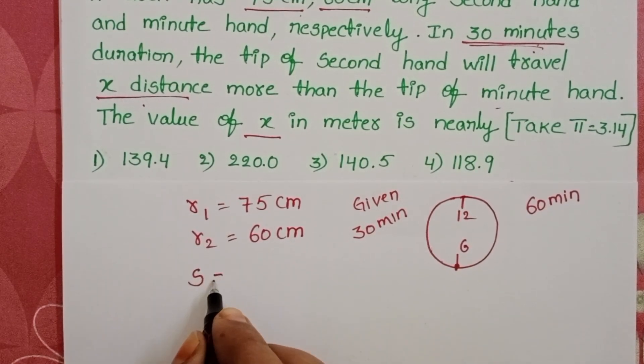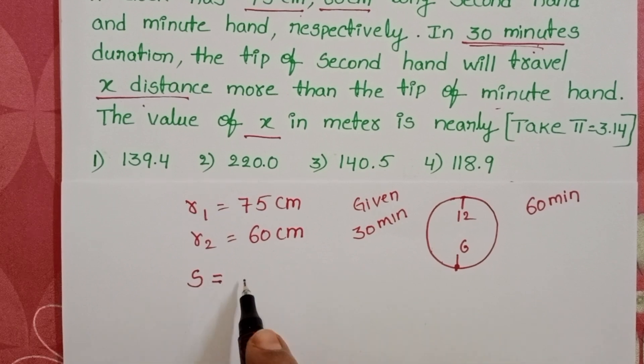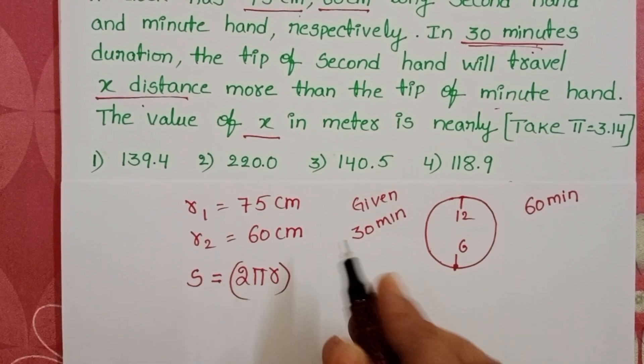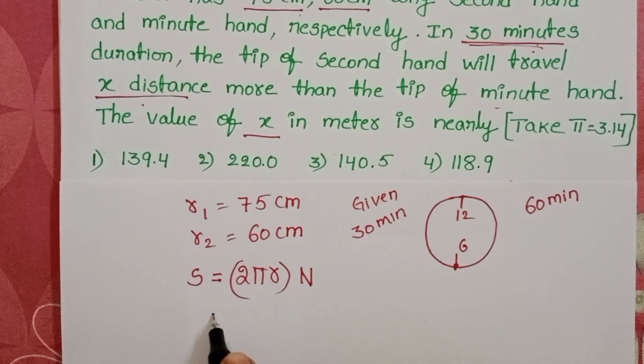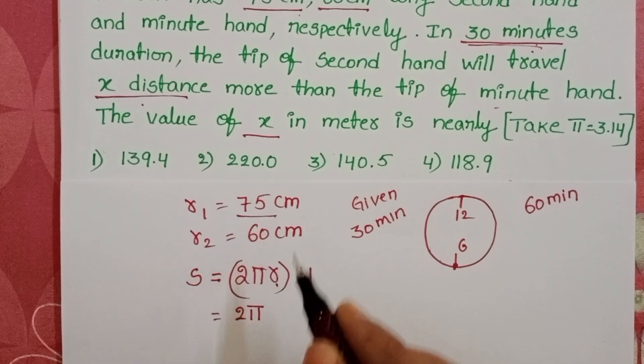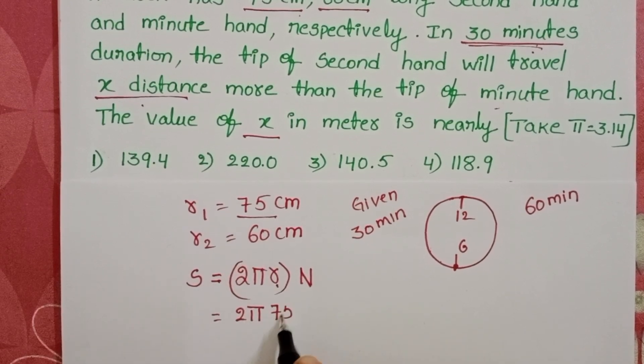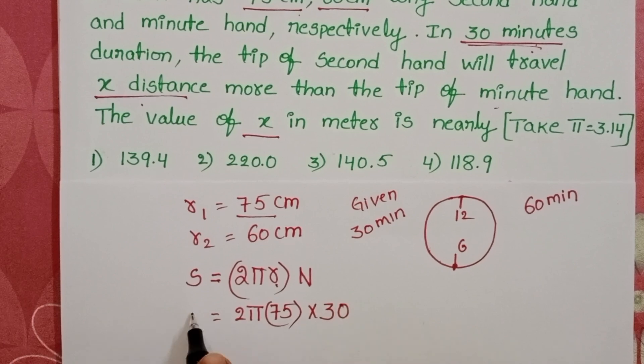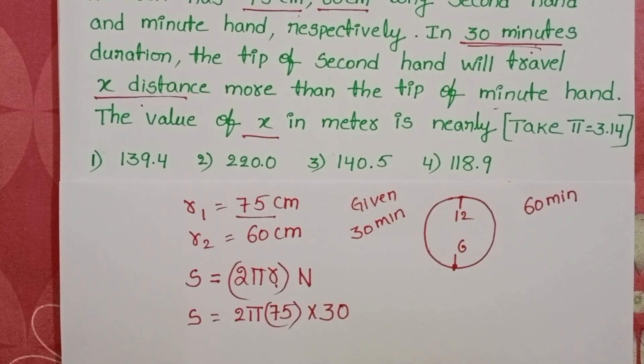Let us take S as the distance travelled by the second hand: 2πR into number of revolutions. R is nothing but the length of the second hand. Length of the second hand is 75. Number of revolutions 30. This is the distance travelled by the second hand.